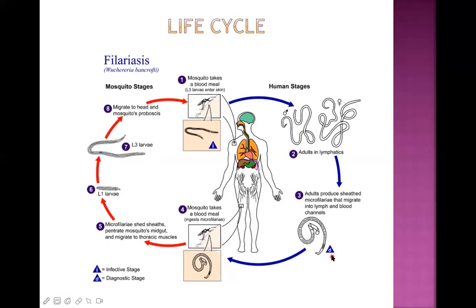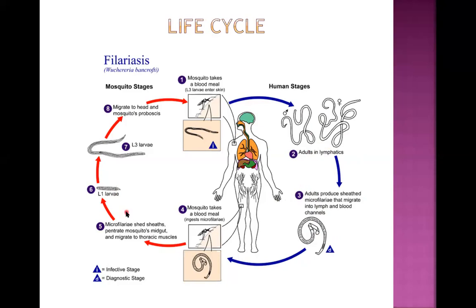In the life cycle diagram, 'D' means diagnostic stage and 'I' means infective stage. The L3 larva is the infective form; all other stages are diagnostic forms. There are two hosts: the definitive host is where the sexual cycle occurs - which is the human being; the mosquito is the intermediate host in filariasis.